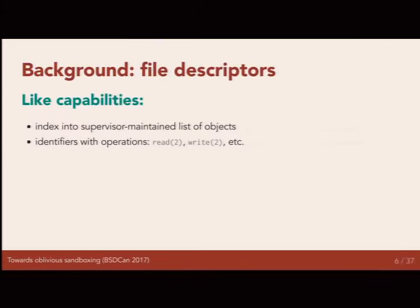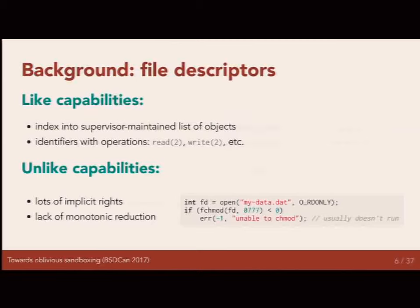File descriptors, in some ways, are a bit like capabilities. We have an index into a kernel-maintained array of things that represent identities of objects in the system, as well as operations we can perform on them — read and write and stuff. However, the thing that was lost was a principled focus on monotonic reduction. File descriptors carry lots of implicit rights and ambient authority because instead of just relying on capabilities, we decided that access control lists and discretionary access control were a good idea. So if you hold a file descriptor, what you're allowed to do is not entirely determined by the file descriptor's properties — it also depends on your user ID and the user ID of the directory.